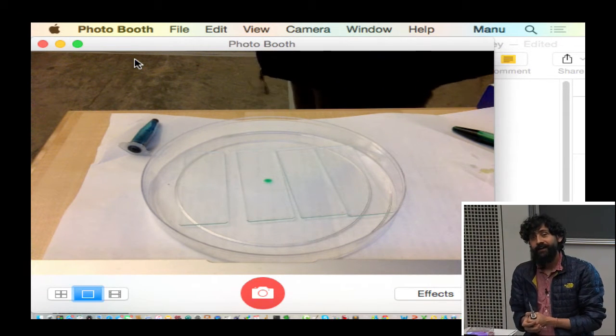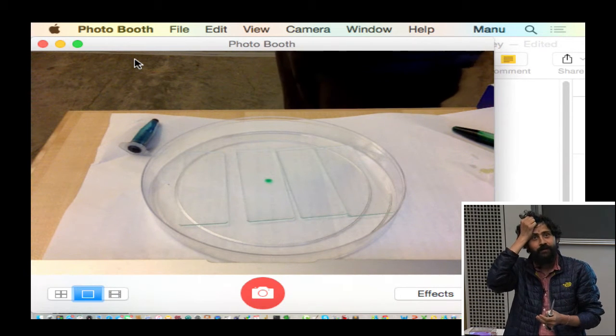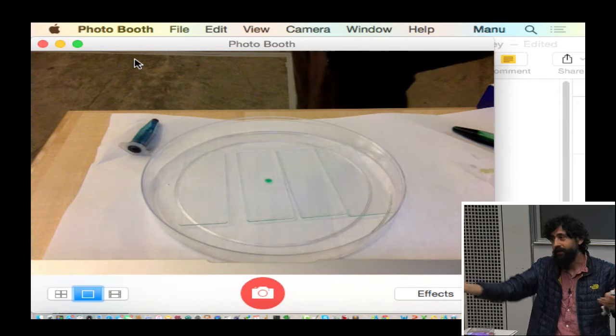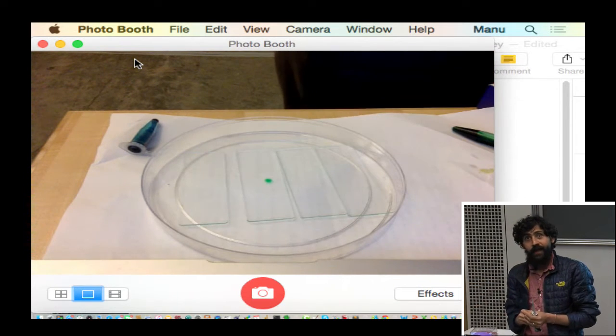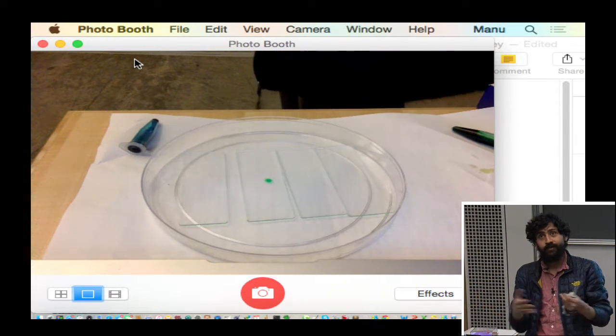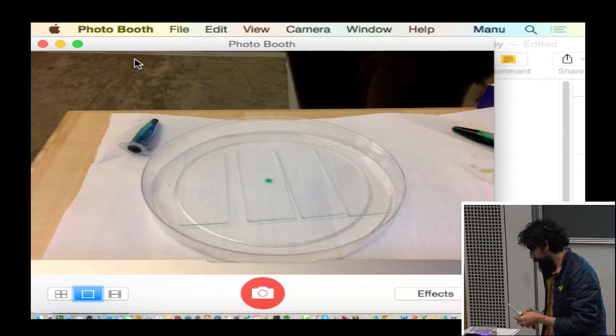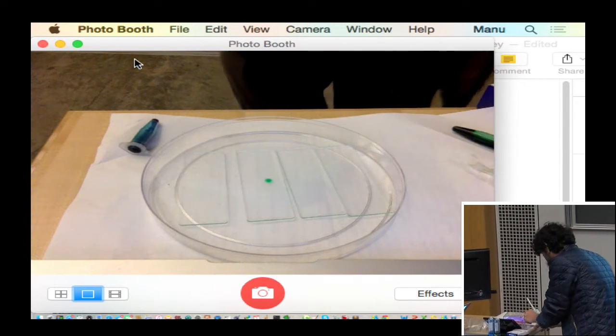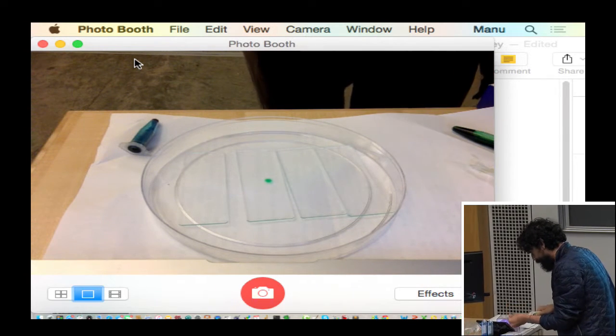Huh. So everybody saw what happened, right? Somehow these two things knew that there was a neighbor right next door. It broke symmetry. And they crawled towards each other. If you didn't see it, you have to knock on your neighbor's shoulder to ask him, did that actually happen?